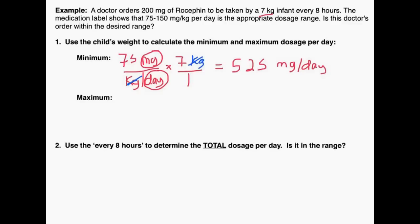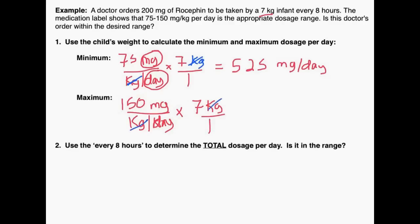I can do the same thing with the maximum: 150 milligrams per kilogram per day, customized by multiplying by the 7 kilograms. The kilograms cancel and I get 1,050 milligrams per day. So for a patient weighing 7 kilograms, the recommended range is between 525 milligrams per day and 1,050 milligrams per day.